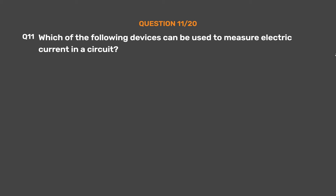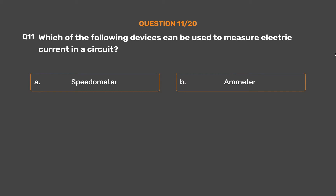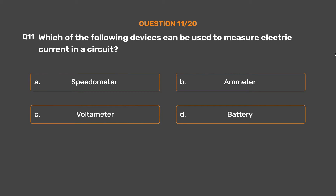Question number 11. Which of the following devices can be used to measure electric current in a circuit? Option A: Speedometer. Option B: Ammeter. Option C: Voltmeter. Option D: Battery.